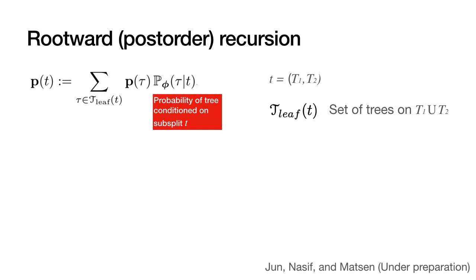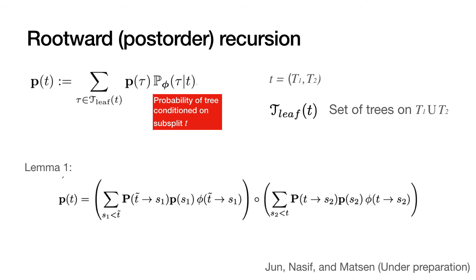So here is a root-ward for post-order recursion. So our definition of the partial likelihood vector for subsplit T sums over the subtrees rooted at T. And the summand is the likelihood over tree tau weighted by the probability of tree as evaluated using subsplit parameters phi. We show that this can be written in terms of the PLVs of the children subsplits.